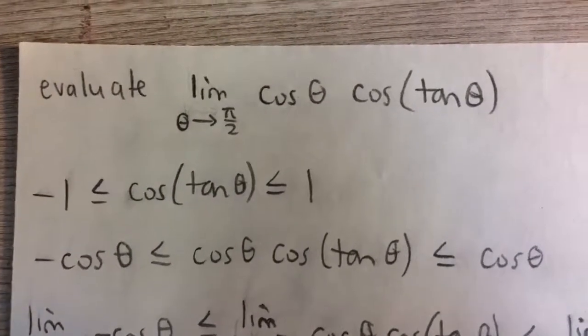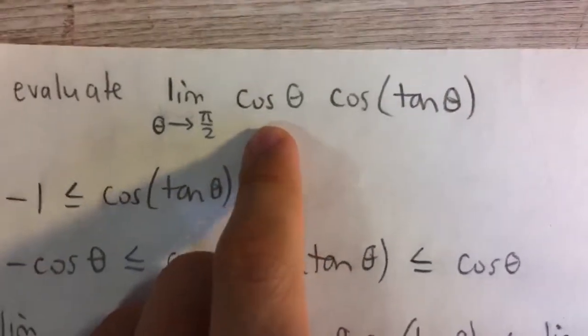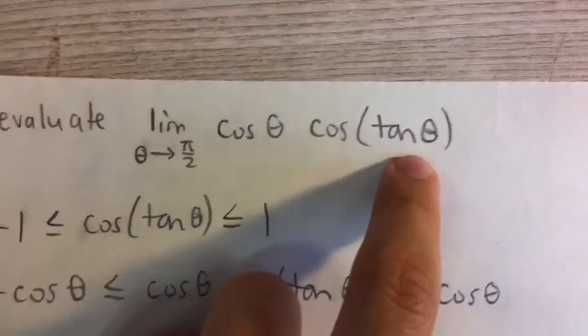Evaluate the limit as theta approaches pi over 2 of cosine theta multiplied by cosine of tangent theta.